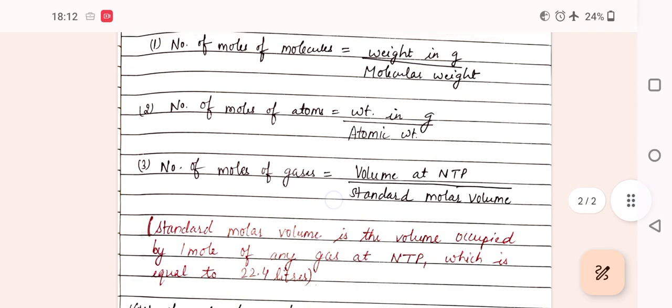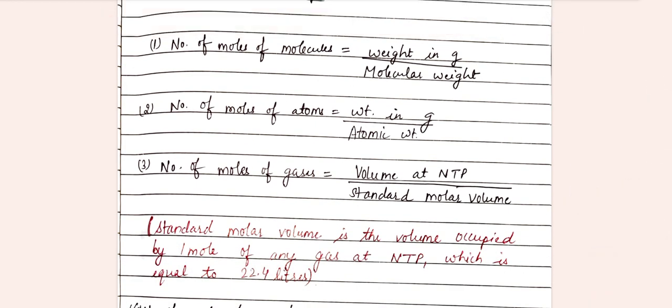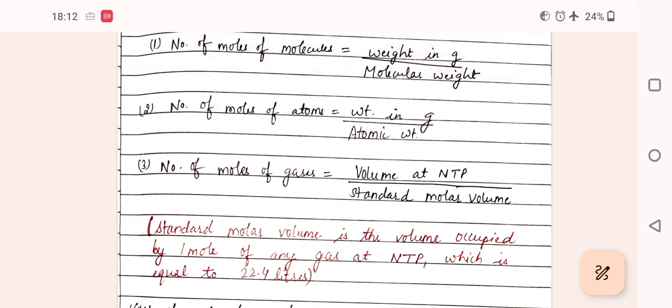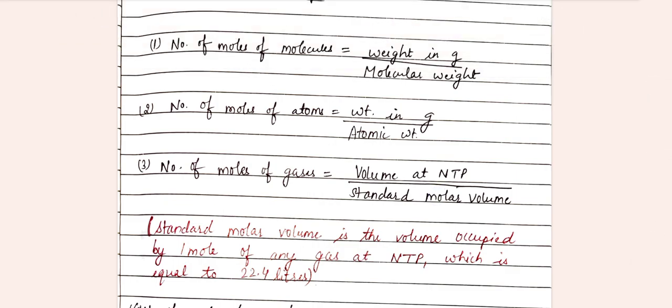If we have number of moles of gases, then it is calculated by dividing the volume at normal temperature and pressure divided by standard molar volume. Now what is standard molar volume?